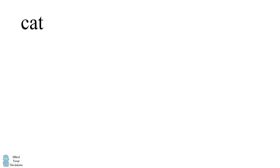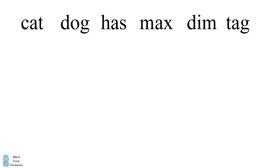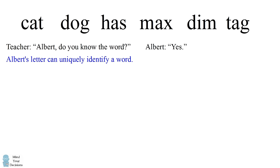We're going to analyze the letters in each of the words in relation to the responses that Albert, Bernard, and Cheryl give. The teacher first asks if Albert knows the word, and he responds that he does know the word. This means that Albert's letter can uniquely identify a word. In other words, the frequency of the letter that he got is exactly 1.